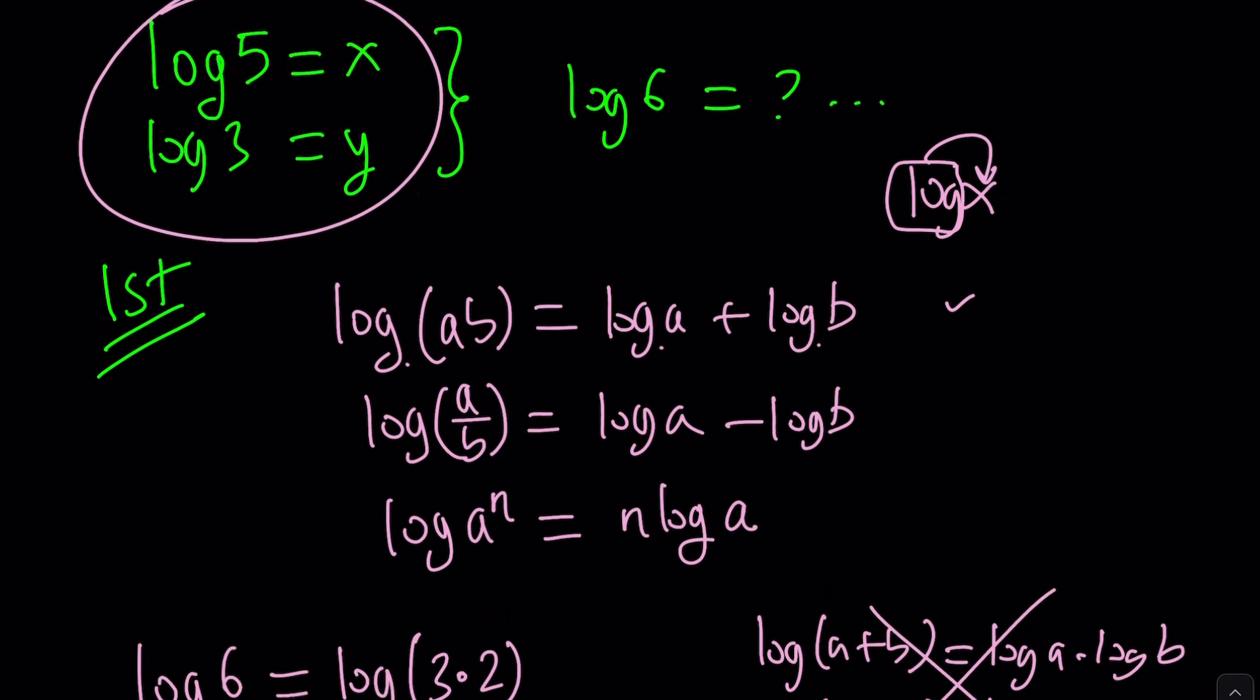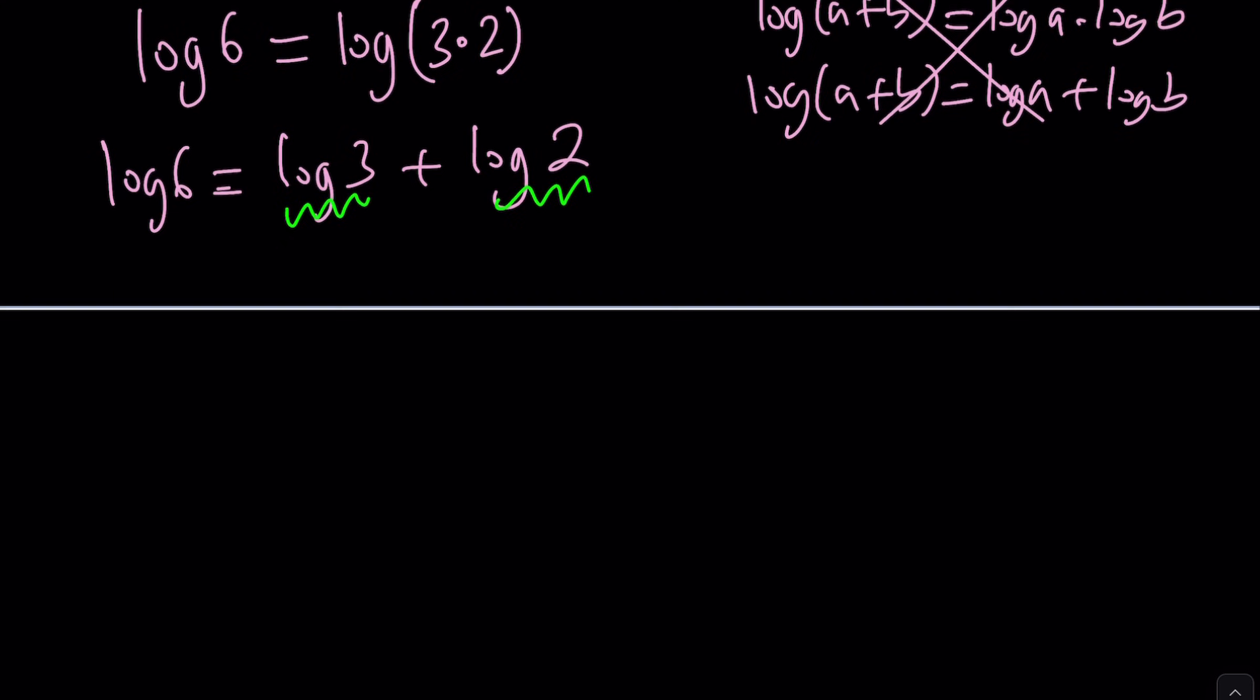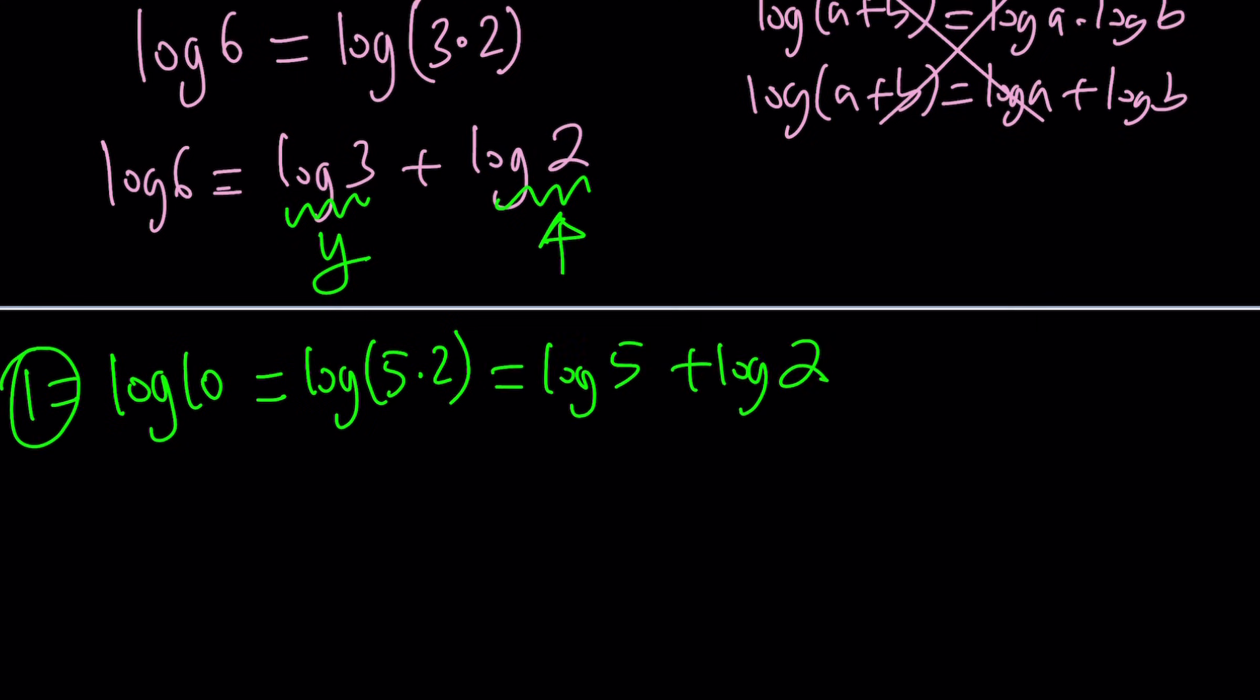So that's what we're trying to find. So that means I do need an expression for log three, and I do need an expression for log two. But wait a minute, log three was already given. And I do need log two. Two and five are related. How? Two times five is equal to ten.